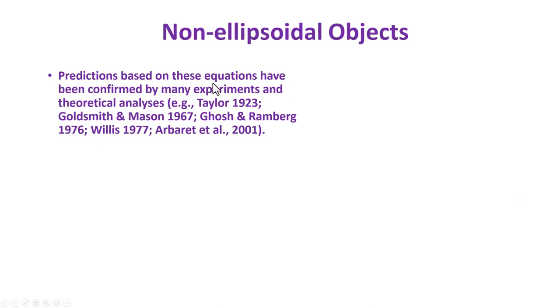Predictions based on Jeffery's equations have been confirmed by many experiments and theoretical analysis. The first experimental confirmation of Jeffery's result was published in 1923, one year past the publication of Jeffery's paper itself. Some of these publications are in geology journals. Ghosh and Ramberg is a two-dimensional special case. Willis published a paper in 1977 in GSA Bulletin. A more recent publication is in Journal of Structural Geology. These experimental results and theoretical analysis all confirm Jeffery's prediction.